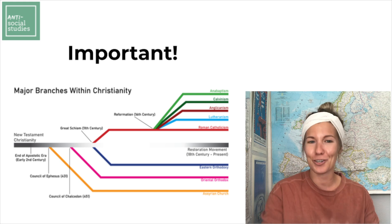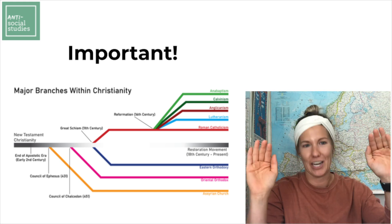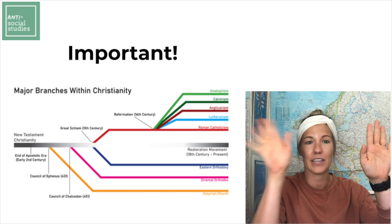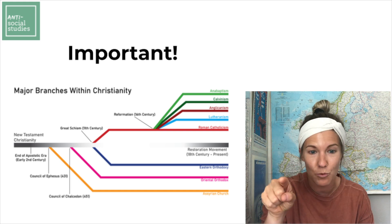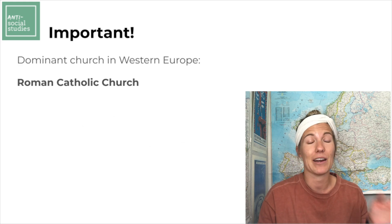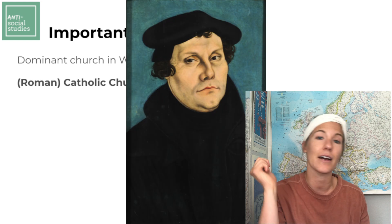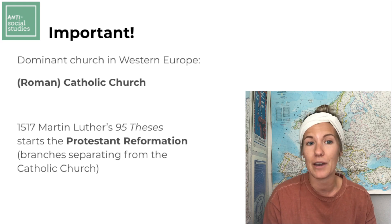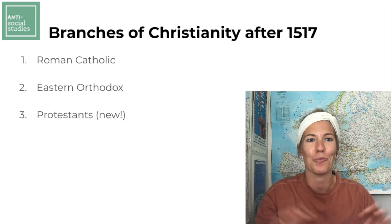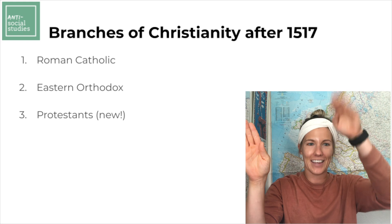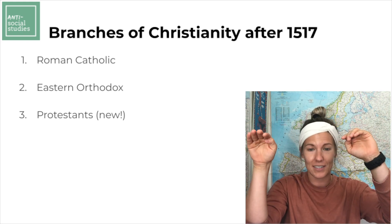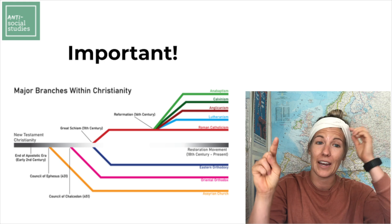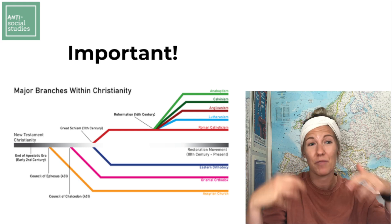We need to understand that under the banner of Christianity there are many different denominations. Maybe you learned about the Great Schism that split the church into the Roman Catholic Church and the Eastern Orthodox Church, but we're looking at the Reformation here. The church that dominated Western Europe during this time was the Roman Catholic Church. When Martin Luther nails his 95 theses on the church door in Wittenberg in 1517, that leads to an incredible number of new denominations forming — all still Christian, whether Roman Catholic, Eastern Orthodox, or these new Protestant denominations, just practicing different versions of Christianity depending on how they interpreted the Bible and theological concepts from the scriptures.